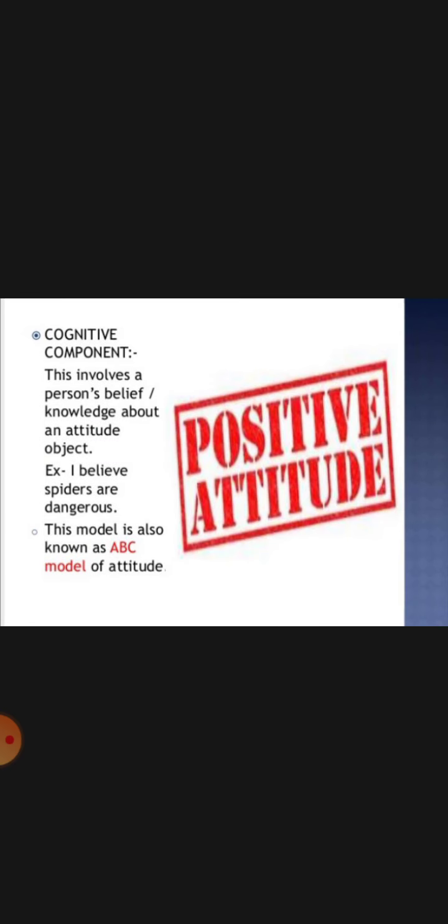The third is the cognitive component. This involves a person's belief and knowledge about an attitude object. For example, 'I believe that spiders are dangerous.' This model is also known as the ABC model of attitude, where A is affective, B is behavioral, and C is cognitive.